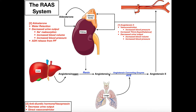Angiotensin 1 is also inactive. It has to be converted to its active form, angiotensin 2, and this is accomplished by the enzyme angiotensin converting enzyme, or ACE. This enzyme ACE is located in the lung endothelium — inside the capillaries of the lungs where gas exchange occurs. So as angiotensin 1 is circulating throughout the blood, it eventually comes to the lungs where it comes in contact with ACE, and ACE converts angiotensin 1 into angiotensin 2.